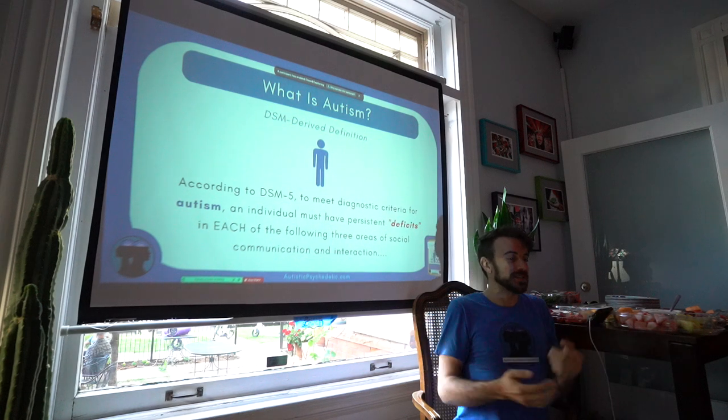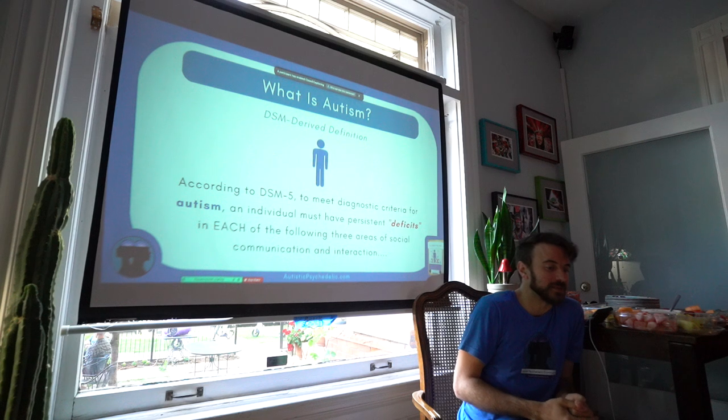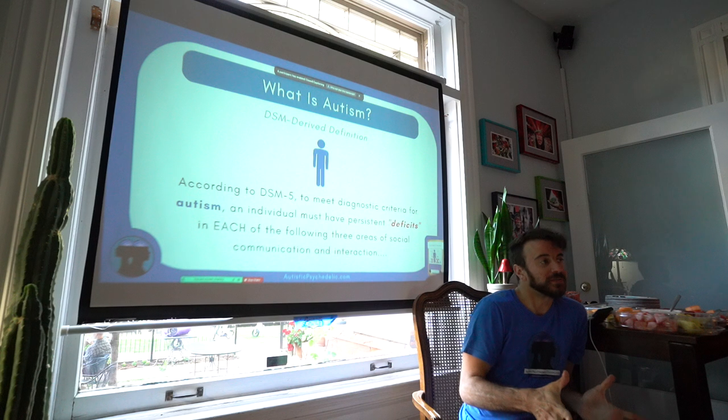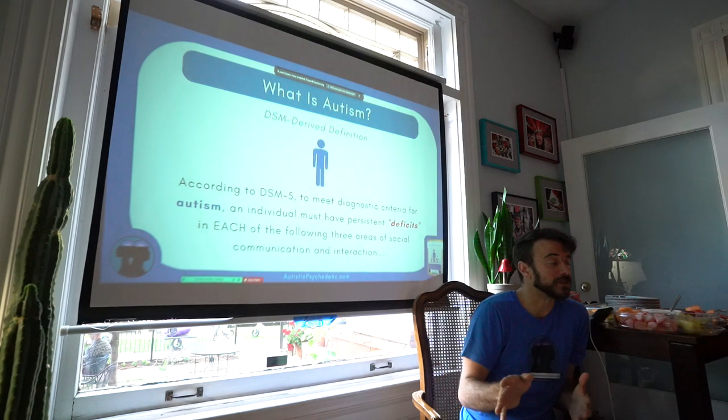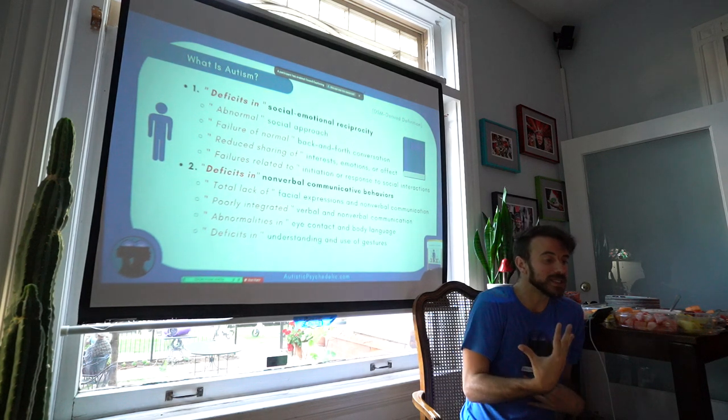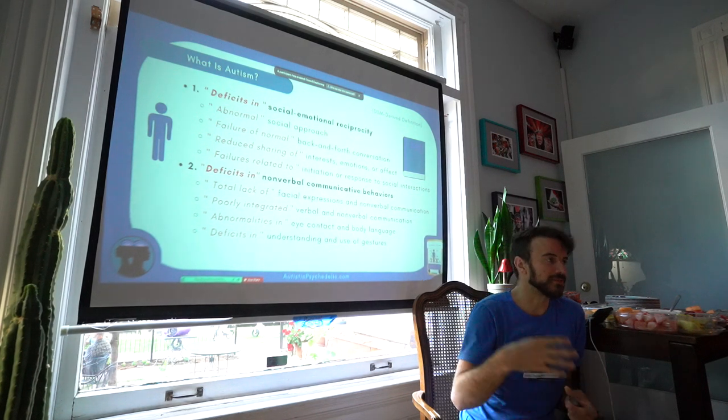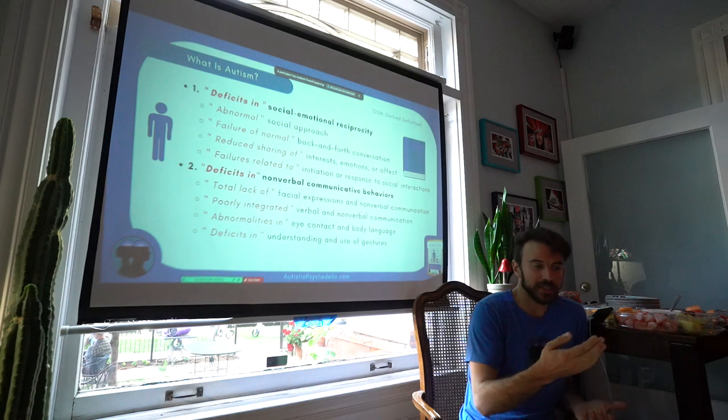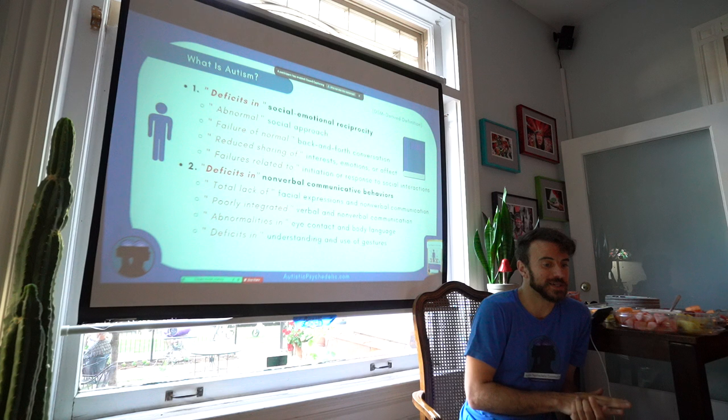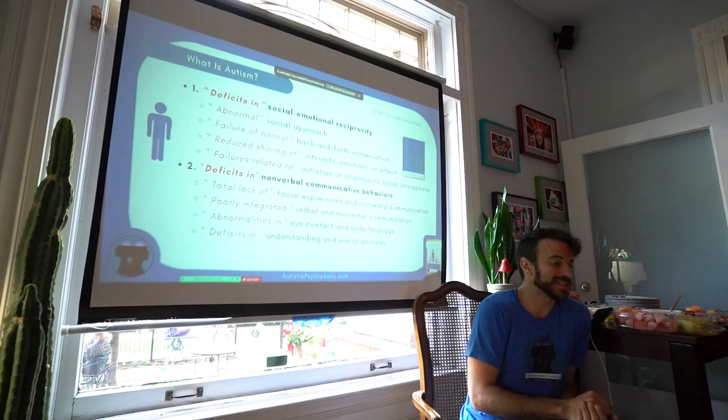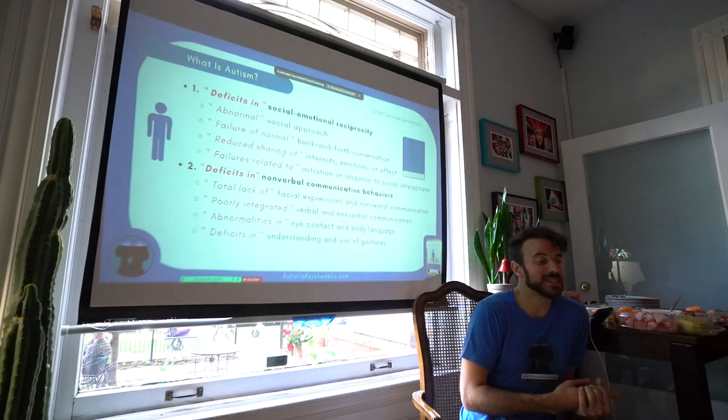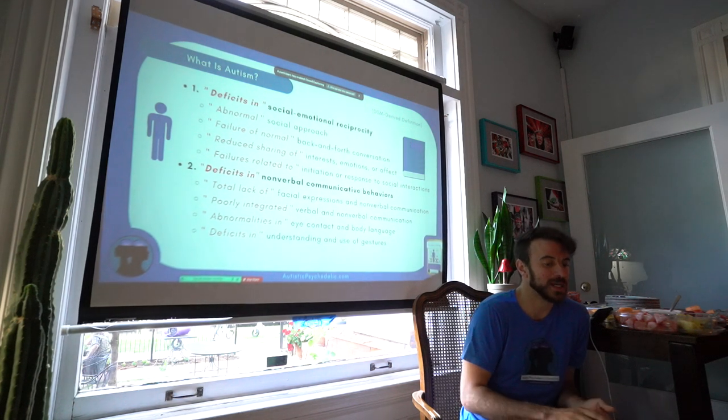So we're going to first look at the DSM, Diagnostical Statistical Manual. So to meet the diagnostic criteria for autism, an individual must have persistent deficits in each of the following three areas of social communication and interaction. And again, this is presented as a point of contrast to what we'll get to shortly, which is more of a neurodiversity model perspective, or a skills-based perspective. But just so we kind of all know, this was what I was diagnosed through. I took the autism quotient exam, and I self-identified with a lot of these traits. It was affirmed by interviews with others that I had such traits. But if you look down the line, there's deficits in social emotional reciprocity, abnormal social approach, failure of normal back and forth conversation, reduced sharing of interests, emotions, or affect, failures related to initiation or response to social interactions, deficits in nonverbal communicative behaviors, total lack of facial expressions and nonverbal communication, poorly integrated verbal and nonverbal communication, abnormalities in eye contact and body language, and deficits in understanding and use of gestures.